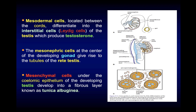At this level the mesonephric cells give rise to the tubules of the rete testis. The seminiferous tubule is U-shaped and discharges spermatozoa into the rete testis sinus, which communicates with the efferent ducts. The coelomic epithelium and a layer of mesoderm differentiate into a fibrous tissue capsule which is the tunica albuginea.